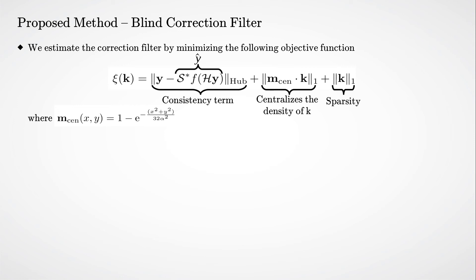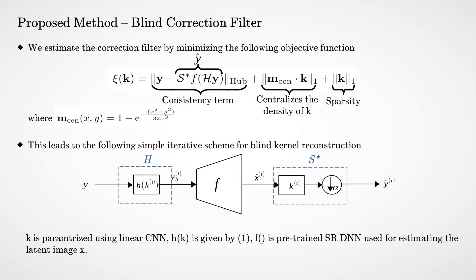We do that by minimizing the following objective function using K. The first term is for consistency, the second is for centralizing the estimated kernel K, and the last promotes sparsity. This leads to the following iterative scheme.